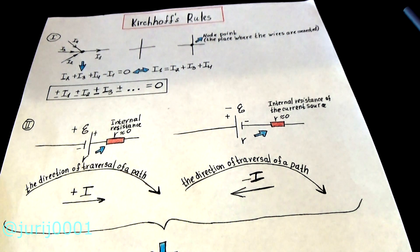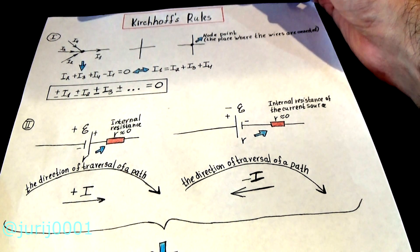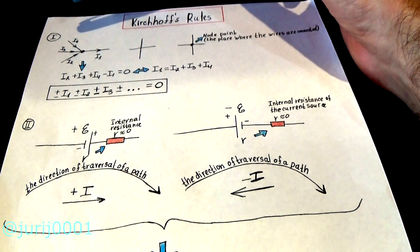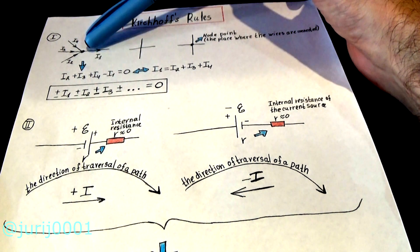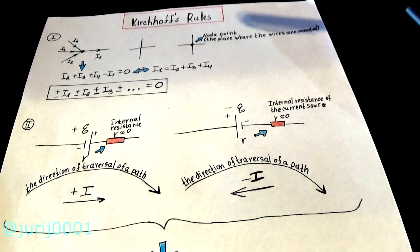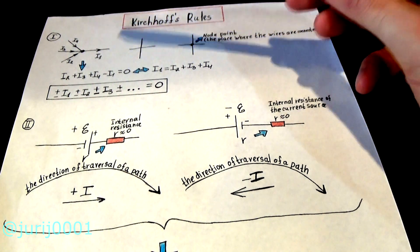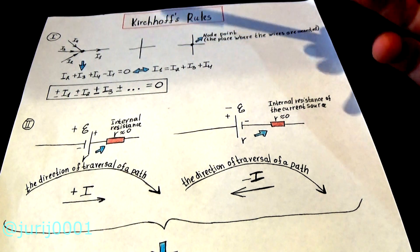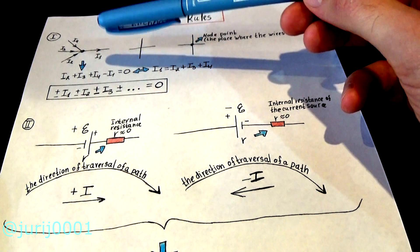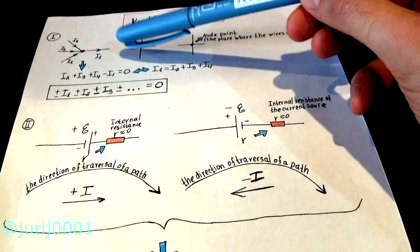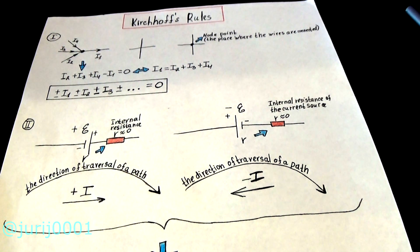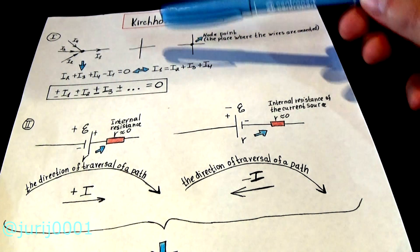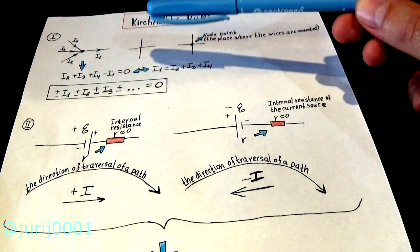The first rule of Kirchhoff is the simplest rule, and it sounds like this: the algebraic sum of the currents entering the node is zero — as much current flows in, so much flows out. Usually the currents that flow into the node are positive, and those that flow out of the node are negative. This is a consequence of the law of conservation of electric charge.